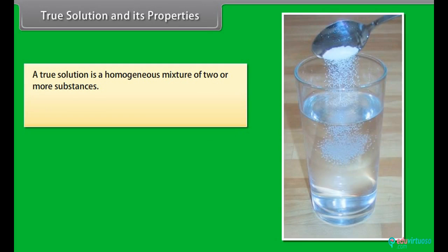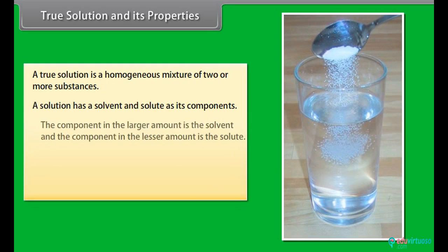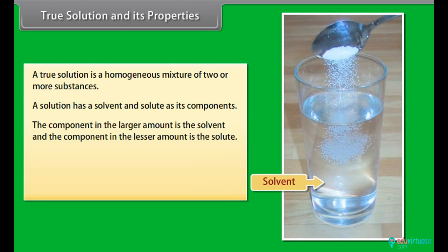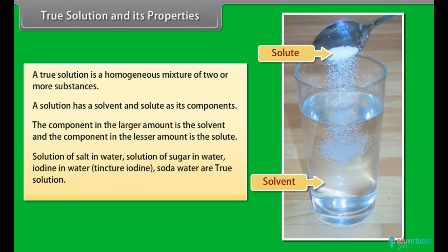True solution and its properties: A true solution is a homogeneous mixture of two or more substances. A solution has a solvent and solute as its components. The component in the larger amount is the solvent and the component in the lesser amount is the solute. Examples include solution of salt in water, solution of sugar in water, iodine in water, tincture iodine, and soda water.